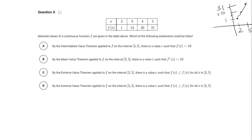B: by the mean value theorem applied to f on the closed interval, there's a value of c such that f prime of c is 10. So first of all, the only condition that we're given is that f is continuous. We do not know if it's differentiable.